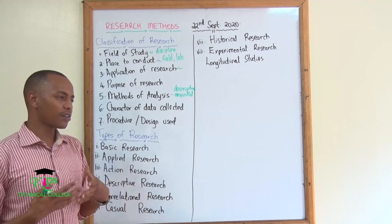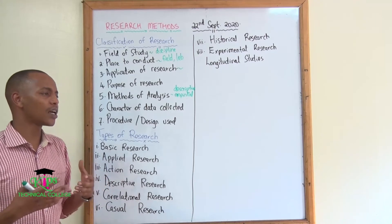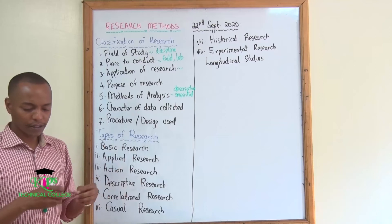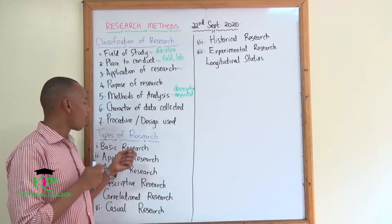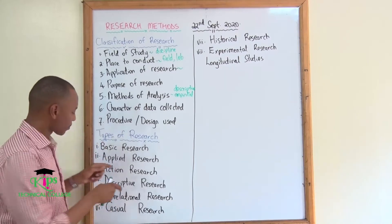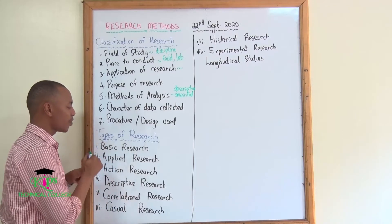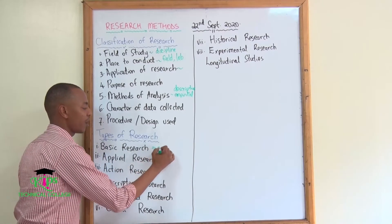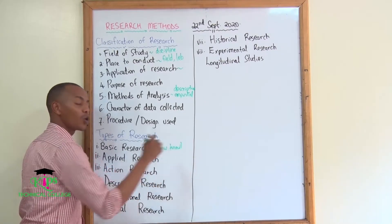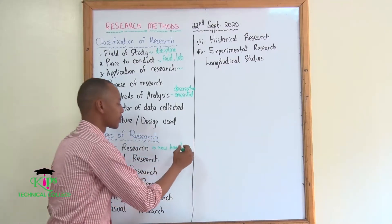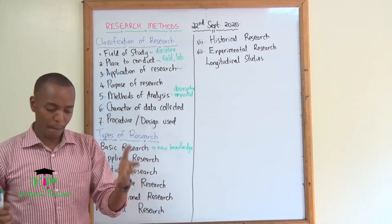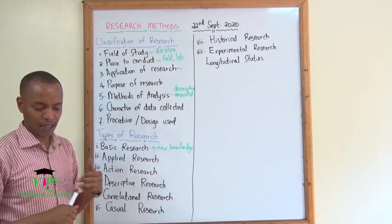Basic research is the type of research you usually undertake so that you know more about whatever is there. Almost all research is basic research. The good thing about basic research is that you are able to generate new knowledge — whatever people used to know about something, you can get more out of it through basic research.